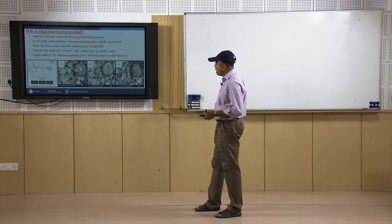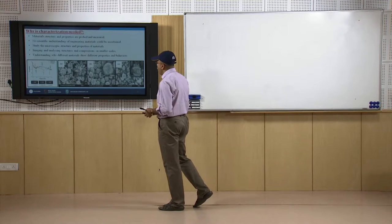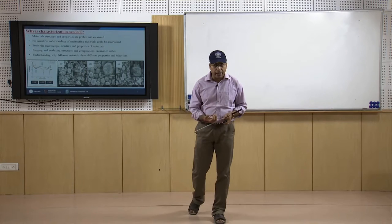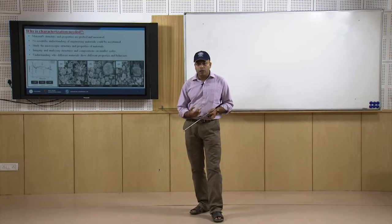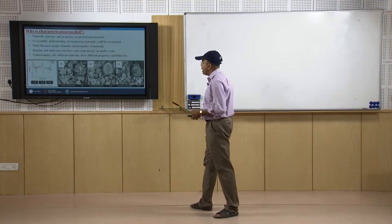First, material structure and properties are probed and measured. No scientific understanding of engineering materials could be ascertained without studying the microscopic structure and properties of materials — imaging and analyzing structures and composition on smaller scales, and understanding why different materials show different properties and behaviors. Unless we know what type of materials we are using, how they are adhering to the substrate, how they are working as coating materials, whether there are any cracks or pores, and how to rectify such problems, we must use different characterization techniques.